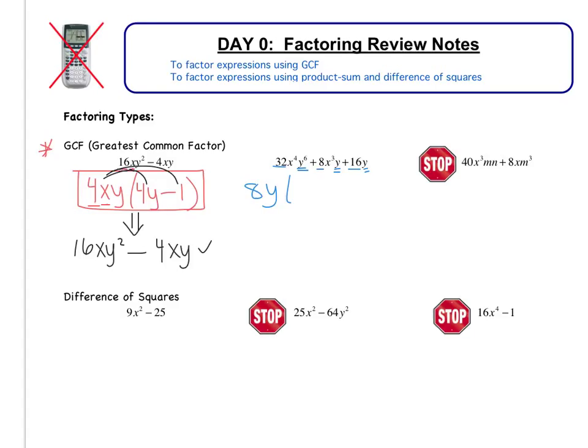Now, what's left? Well, 32 when I divide it by 8 is 4. I didn't take any of those x's out, so x to the 4th remains. I had y to the 6th. I factor out 1y, so I'm left with y to the 5th. 8, take out an 8, is gone. x to the 3rd stays. y, if I factor out a y, is just nothing, just 1. So it's only x to the 3rd. For the last term, 16y, if I take out an 8y, I'm left with 2.